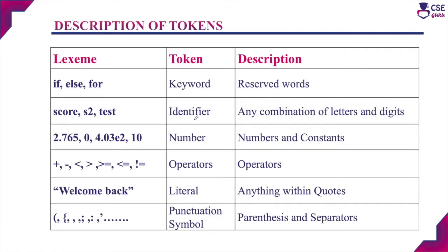Next, the description of tokens. These are all the possible tokens used in a source program and their descriptions are given in this table. Considering the lexemes 'if', 'else', and 'for', these will match with the pattern for keywords. The token name is 'keyword' — any reserved word present in the particular programming language. These reserved words are called keywords. Lexemes like 'score', 's2', 'test' — if any name is used with a combination of letters and digits, that will come under the token name 'identifier'.